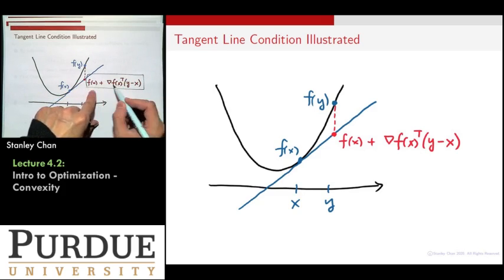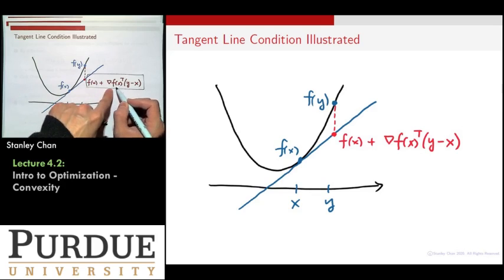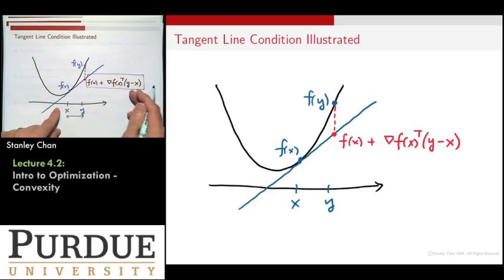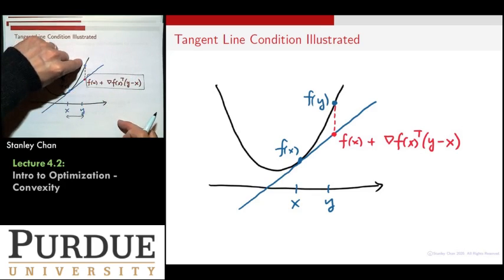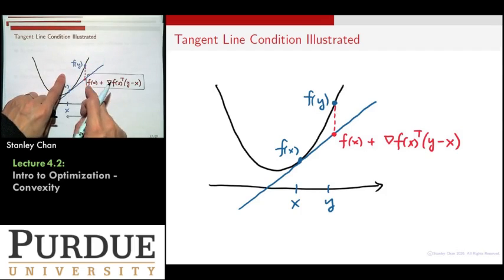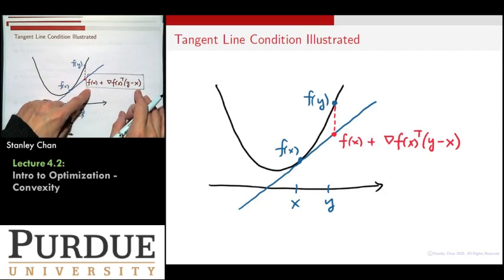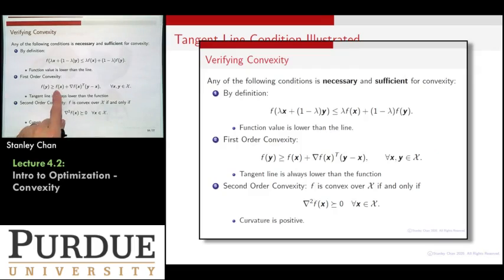That will be this f(x) plus, this is your slope, plus however interval that you need to travel. So that will be the point. Here is your f(y). Well, f(y) has to be bigger than this quantity. It is a convex function. That's how you can get to this criteria.